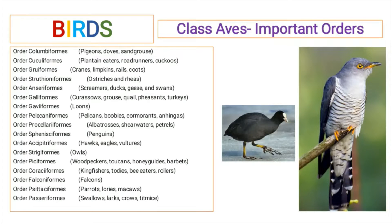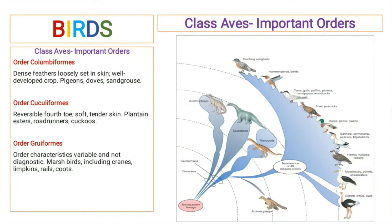First, order Columbiformes: it includes birds that have dense feathers, and these feathers are loosely set within the skin. They have a well-developed crop. It includes pigeons, doves, and sand grouses. Next is order Cuculiformes: they have a reversible fourth toe and soft tender skin.